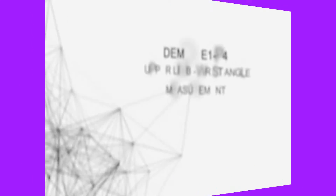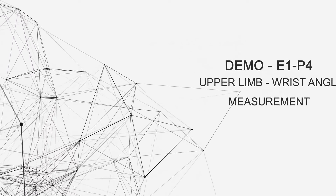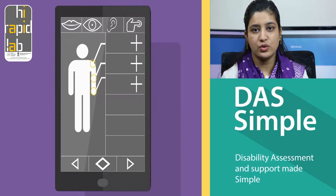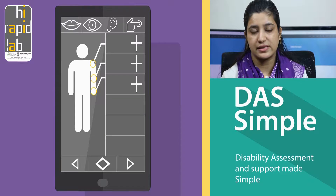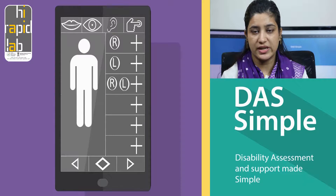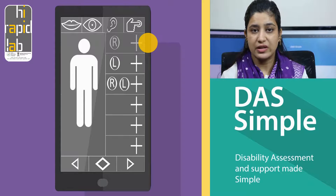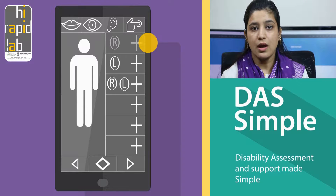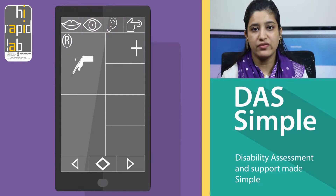In this video we will demonstrate how to assess the wrist joint for active range of movement first, and manual muscle testing next. Please click on the wrist joint to proceed. The next slide shows options for testing the right, left, or both wrist joints. Please click appropriately. For demonstration we will describe assessment of the right wrist only. Please click on right wrist assessment to proceed.